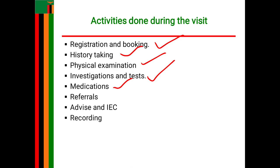The woman should also be given tetanus toxoid (TT) doses. A woman should have at least five doses of TT. If she does not, the first dose is given on first contact, the second dose at four weeks, the third at 24 weeks, and the fourth and fifth doses each one year apart. Ideally, a woman should have all five doses before becoming pregnant.